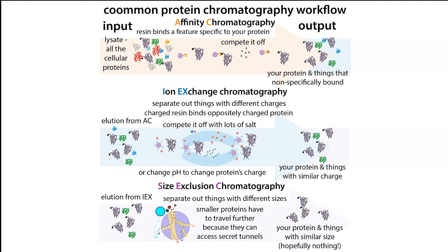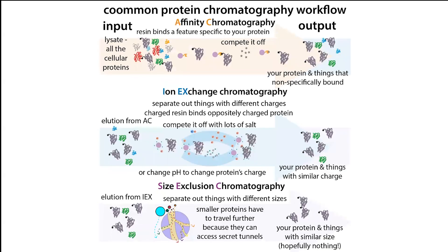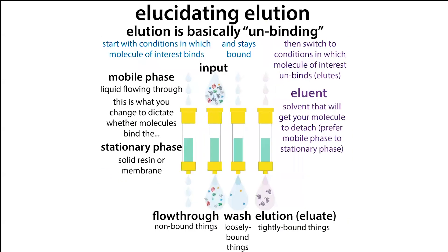For ion exchange chromatography, you might need to change the salt or the pH so that your protein is going to be more oppositely charged and thus bind better. Hopefully in your eluate it's going to be fairly pure. You can then take this on to additional chromatography steps like ion exchange chromatography or size exclusion chromatography — often doing a workflow where you go from one chromatography column to the next. Hopefully this helped you understand the terms regarding elution — remember, it's basically just a fancy word for unbinding.